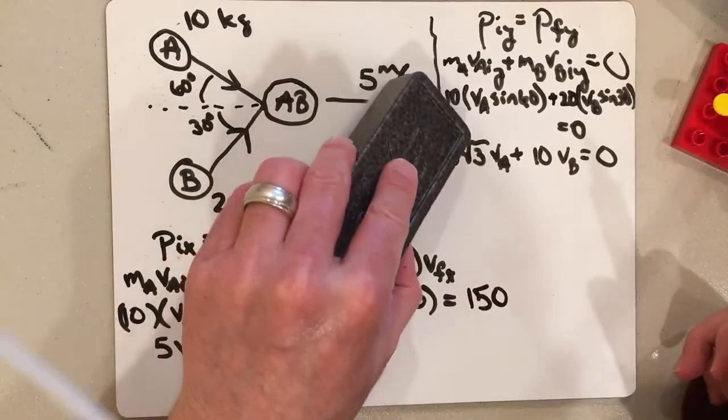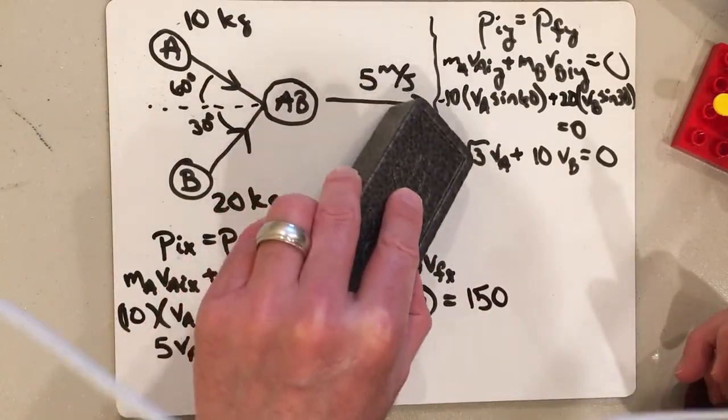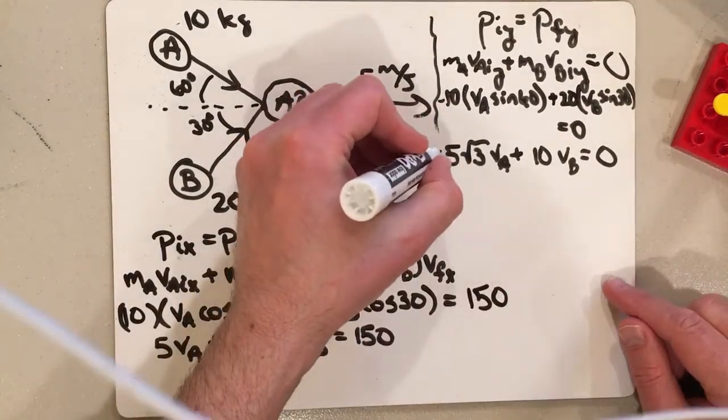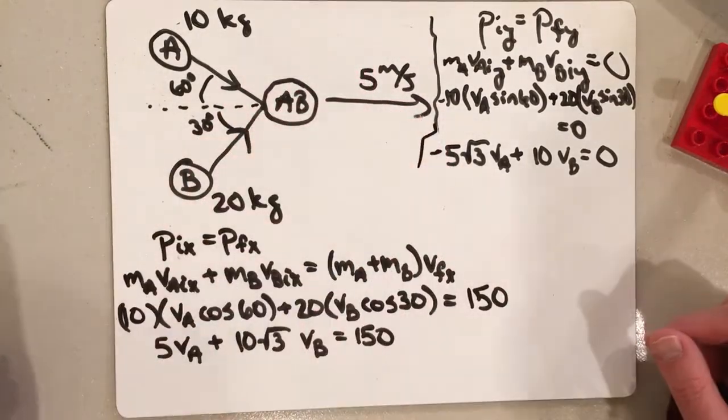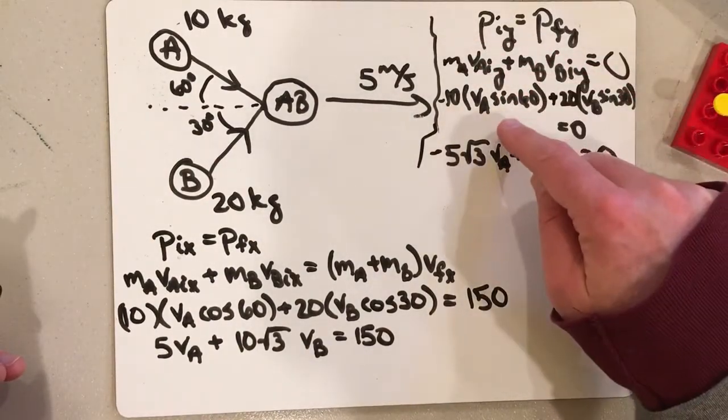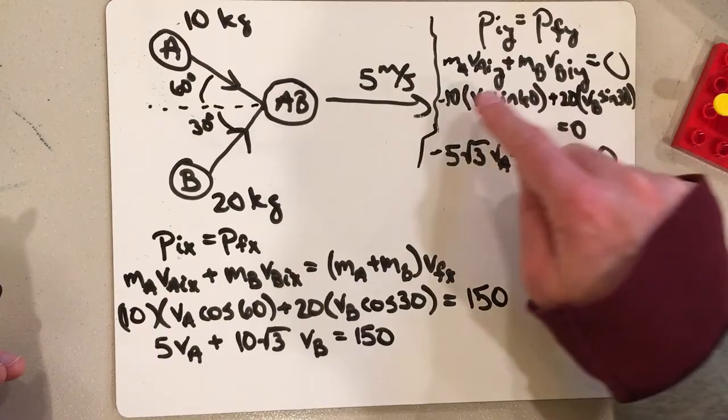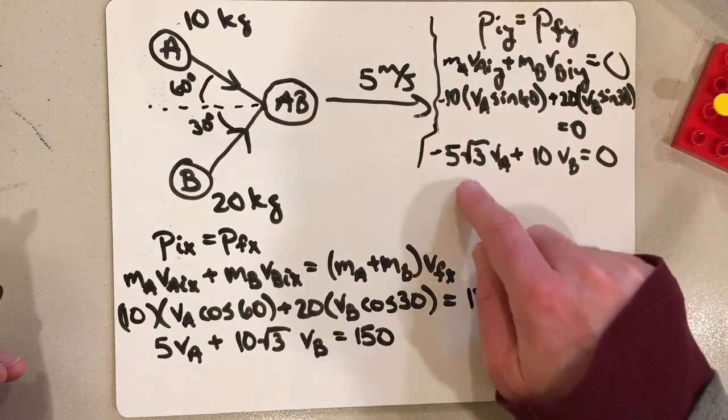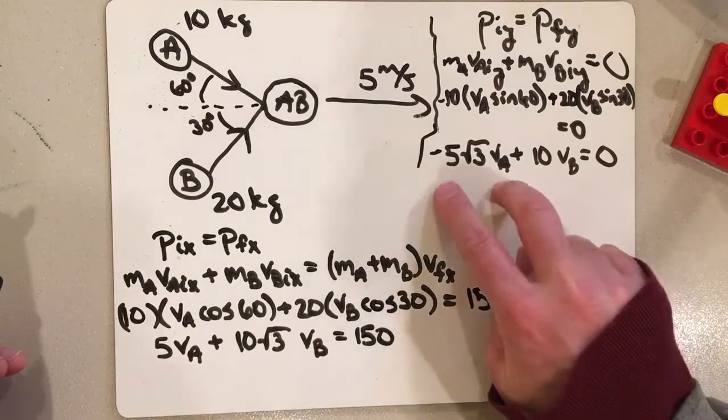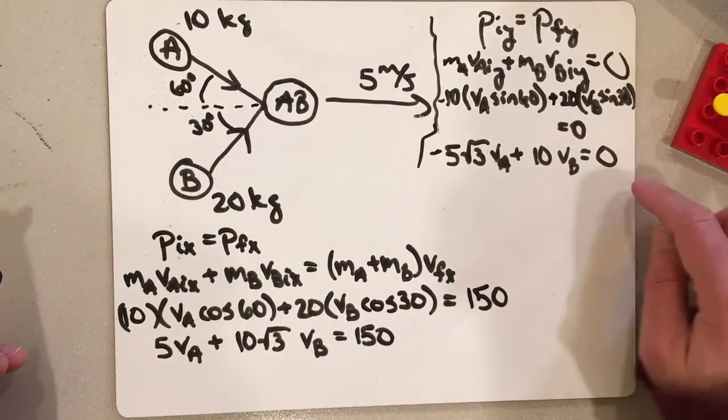There should be a minus sign right there. And that, again, is because the Y component of the velocity is going to be negative. So this really came from the Y component of the velocity. That has to be negative. And that's why I'm going to be adding this negative quantity to this positive quantity to get zero.